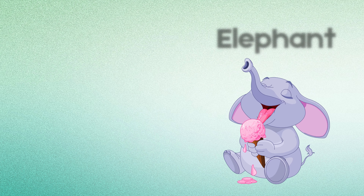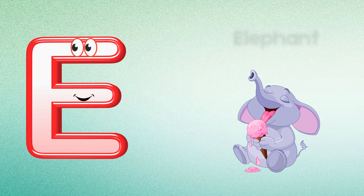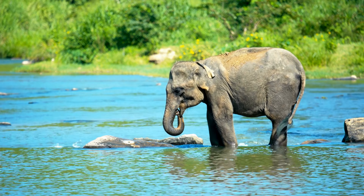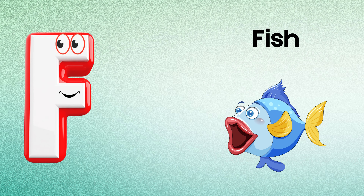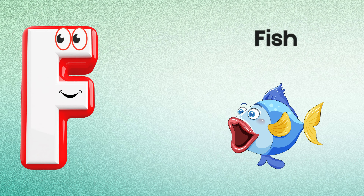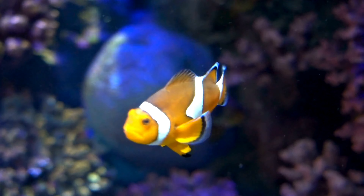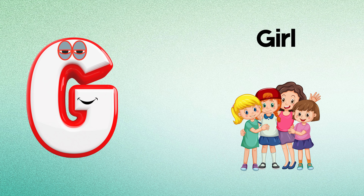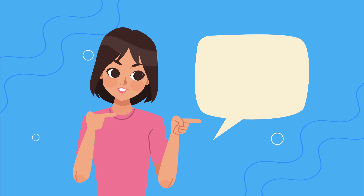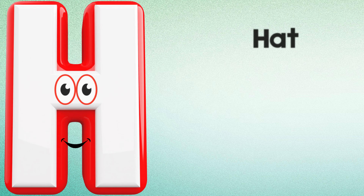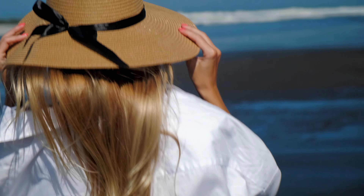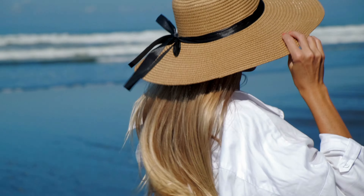E is for Elephant. E-E-Elephant, E-Elephant. F is for Fish. F-F-Fish, F-Fish. G is for Girl. G-G-Girl, G-Girl. H is for Hat. H-H-Hat, H-Hat.